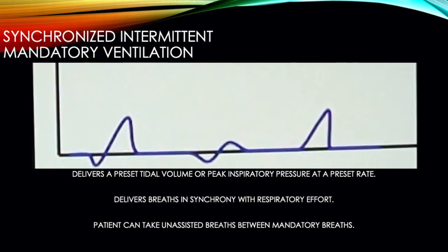The patient can take unassisted breaths between mandatory breaths, but now, if the vent senses that a spontaneous respiration occurs close enough to the time that a mandatory respiration should be delivered, it will assist the spontaneous respiration and forego the mandatory one. If a spontaneous effort is not close enough in time to a mandatory breath, it will not be assisted.